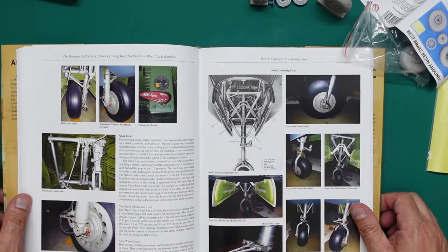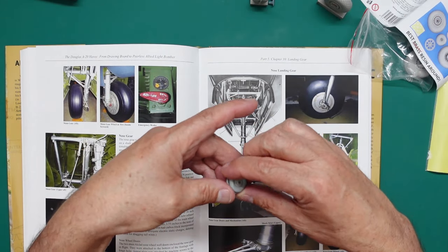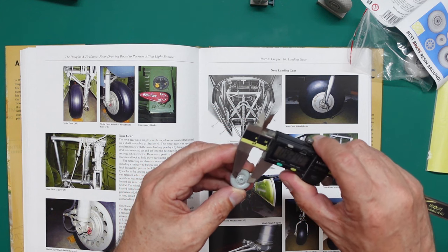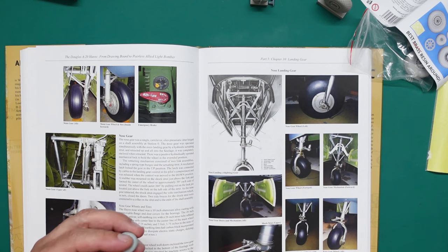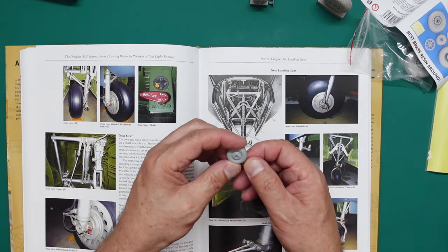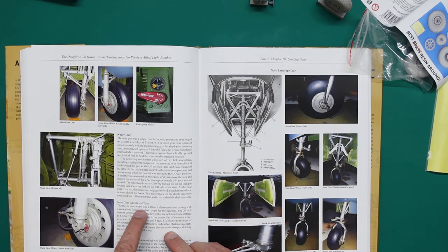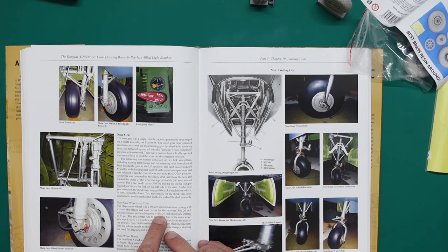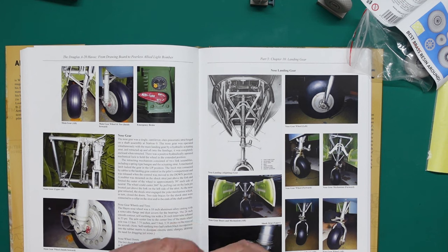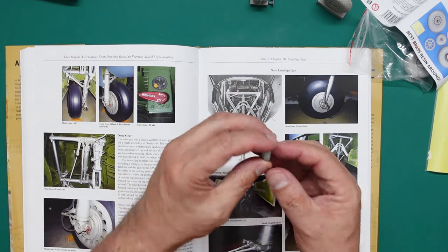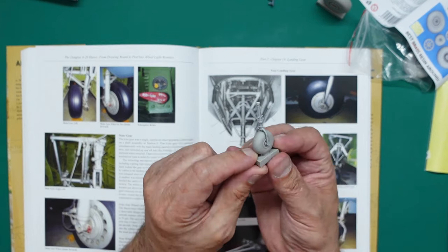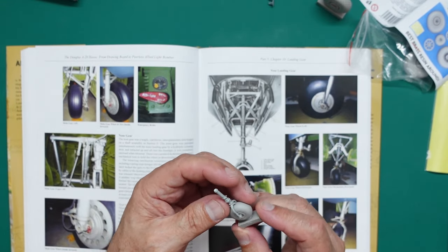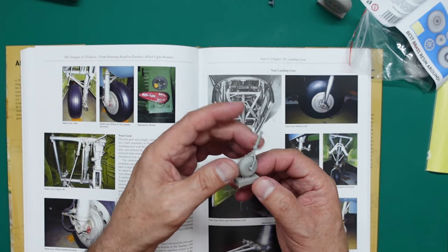Nose gear, different story - it's absolutely gorgeous. The kit nose gear has the flat spot on the bottom. The overall diameter of this one is great, about 0.81 inches. The Hayes nose wheel was a 10 inch aluminum alloy casting with a 26 inch smooth contour self-sealing tire. The actual OD of the nose gear is absolutely fine, but the wheel itself is too big.